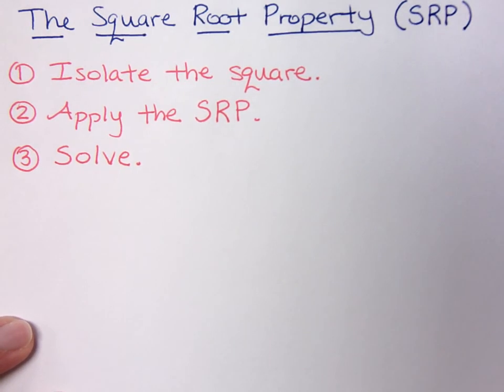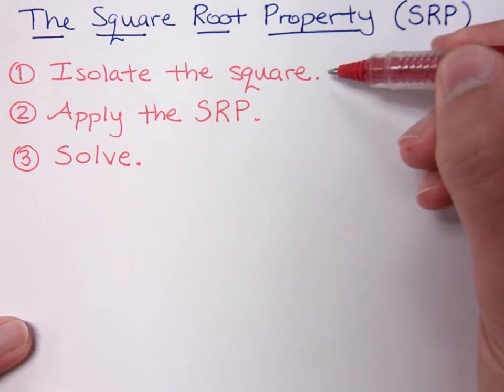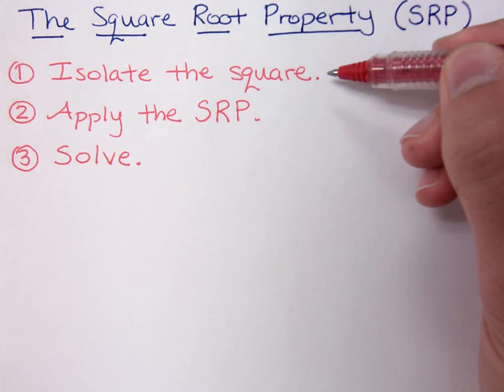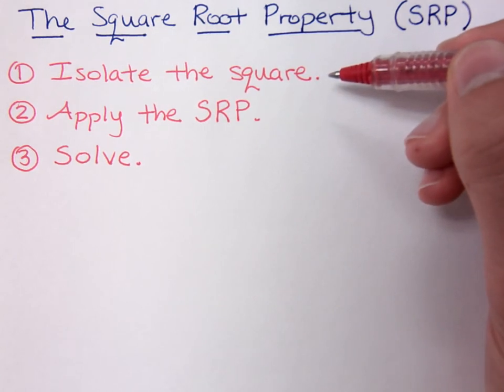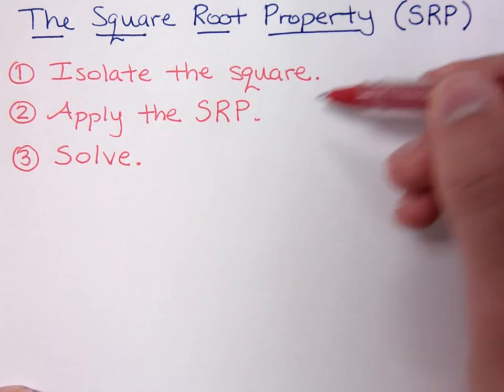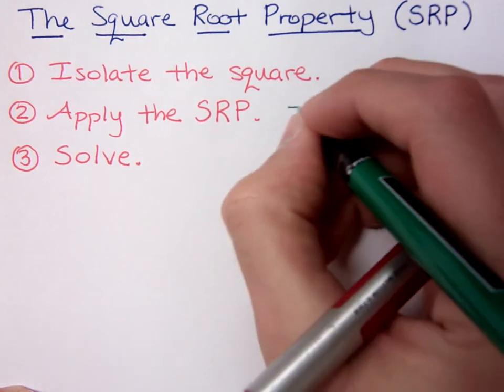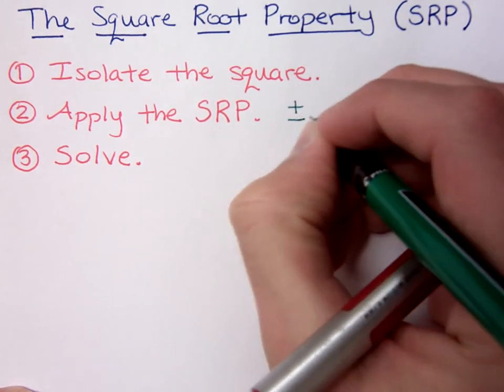Here are the steps that we need to take in order to solve by using the square root property. The first step is to isolate the square. Now the square may be just x squared, but it may also be a quantity squared, say like x plus 2 quantity squared. Isolate the square, then you apply the square root property. Don't forget the plus or minus.